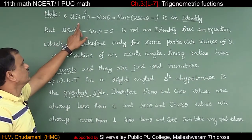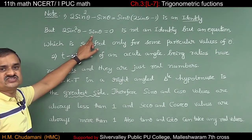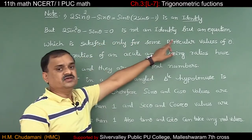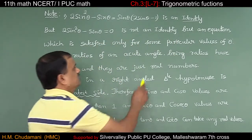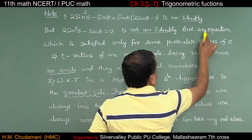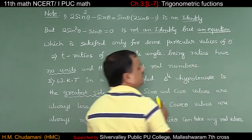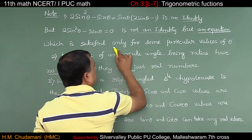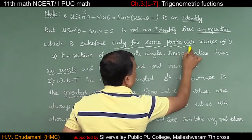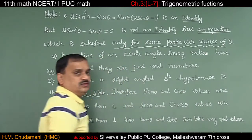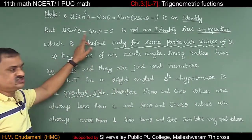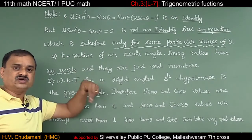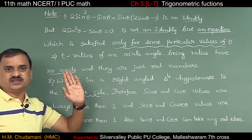Whereas, 2 sin²θ − sin θ = 0 is not an identity. In fact, it is an equation — not an identity — and it is an equation which is satisfied only for some particular values of theta. An equation is satisfied only for some particular values of theta, whereas an identity is satisfied for all values of theta.